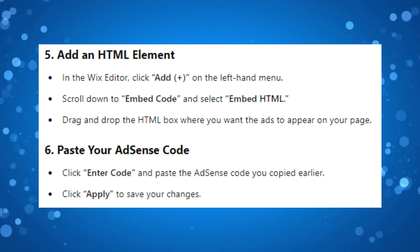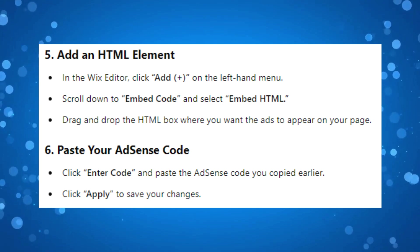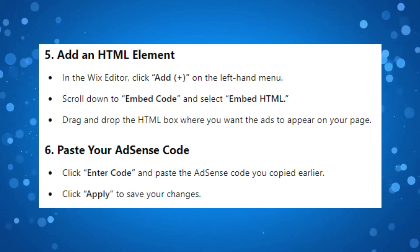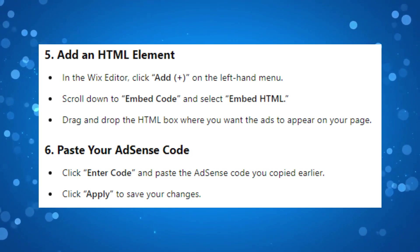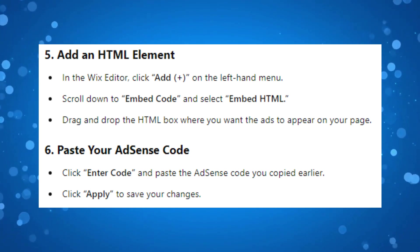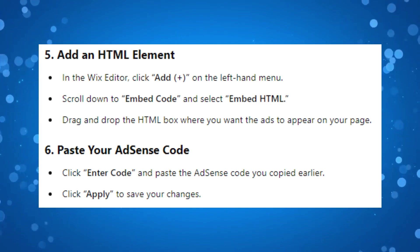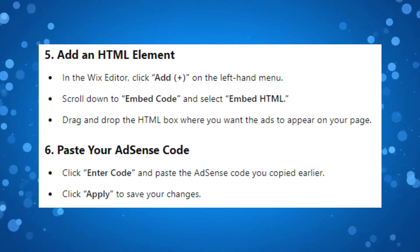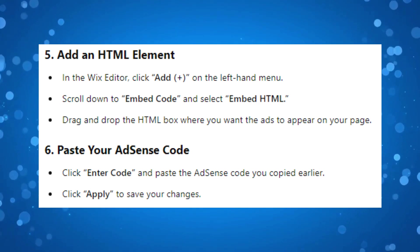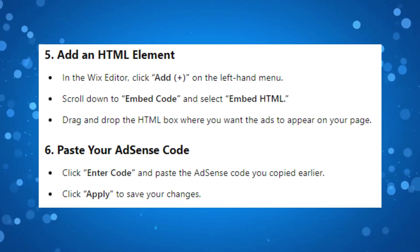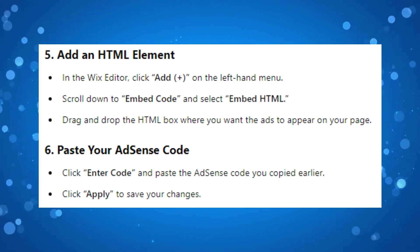From here in the Wix editor, click on the Add plus button on the left-hand menu, then scroll down to Embed Code and select Embed HTML. Then drag and drop the HTML box where you want the ads to appear on your page.